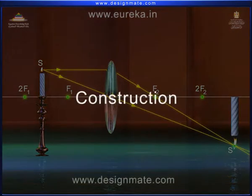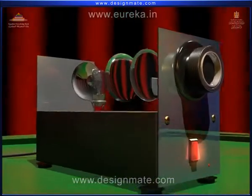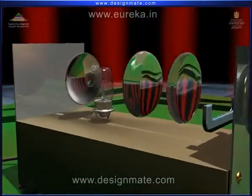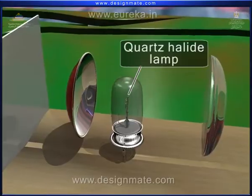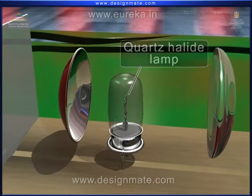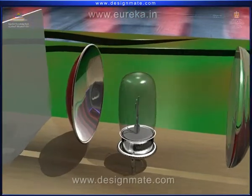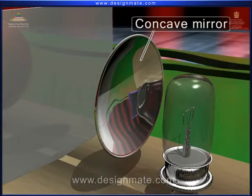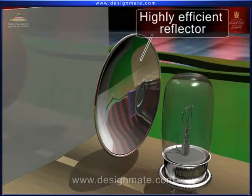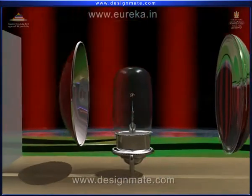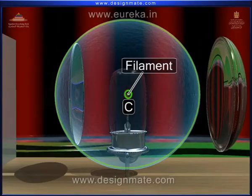Now let us see the construction of a slide projector. A slide projector basically consists of a high power quartz halide lamp placed in front of a concave mirror, which is a highly efficient reflector. The filament of the lamp is at the center of curvature, C, of the mirror.